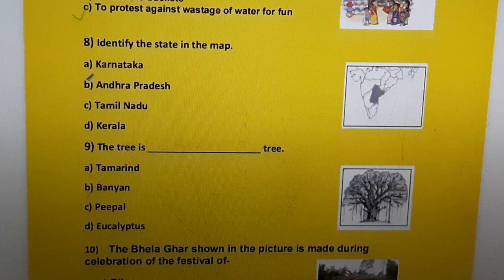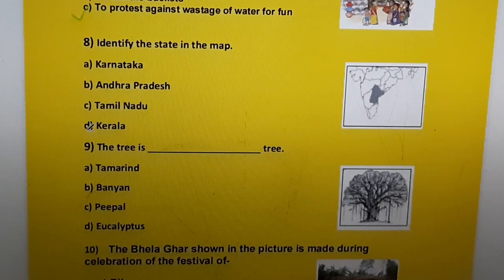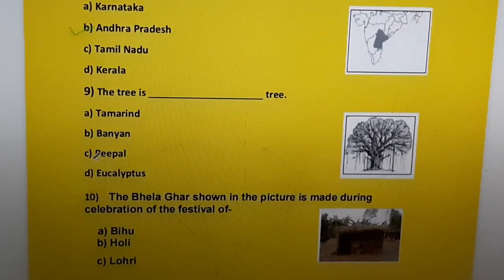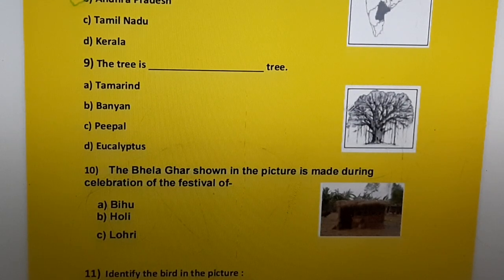Question eight: Identify the state in the map. Options are a) Karnataka, b) Andhra Pradesh, c) Tamil Nadu, d) Kerala. The correct answer is b) Andhra Pradesh.